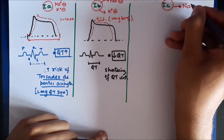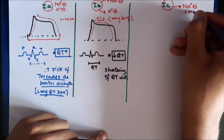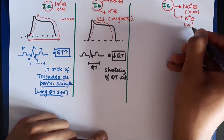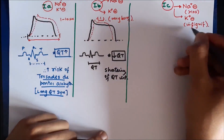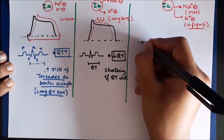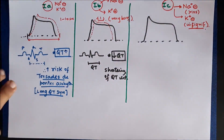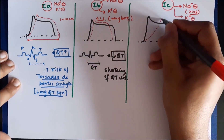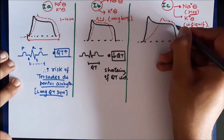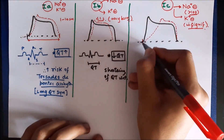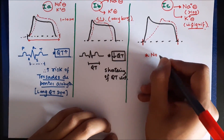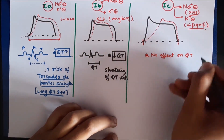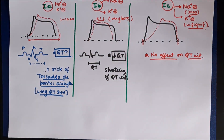Class 1c drugs cause maximum blockade of sodium channels — for more than 10 seconds — and also block potassium channels insignificantly. Looking at the action potential graph, the delay in depolarization is maximum, however there is no significant change in repolarization. Because of this, the duration between the beginning of depolarization and the end of repolarization is almost the same — in other words, there is no significant effect on the QT interval.